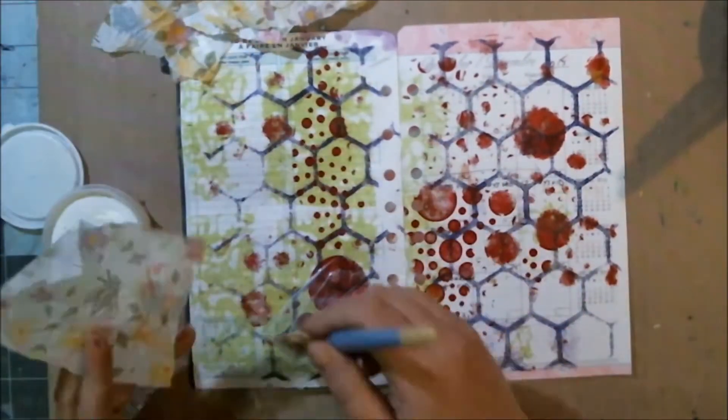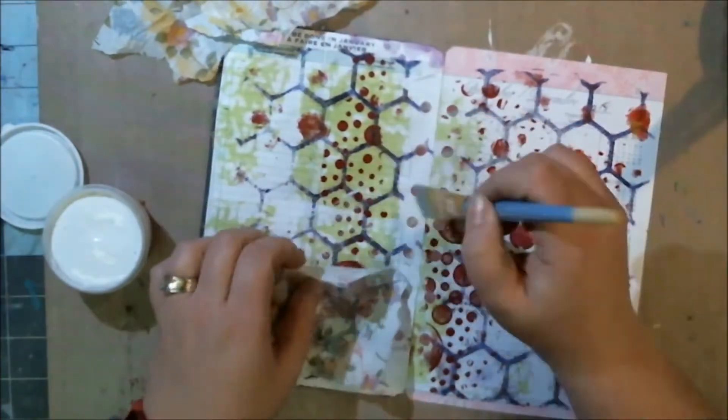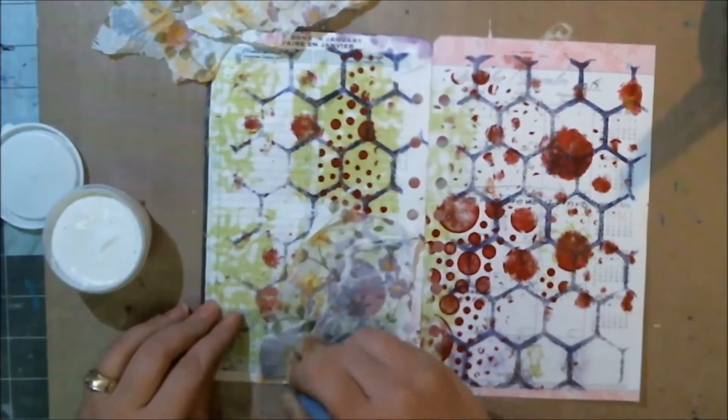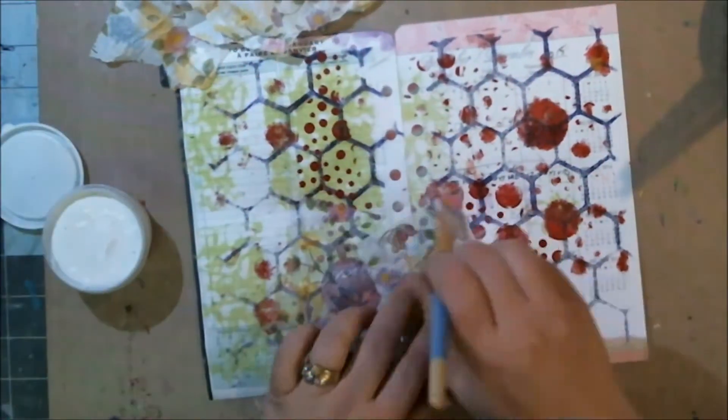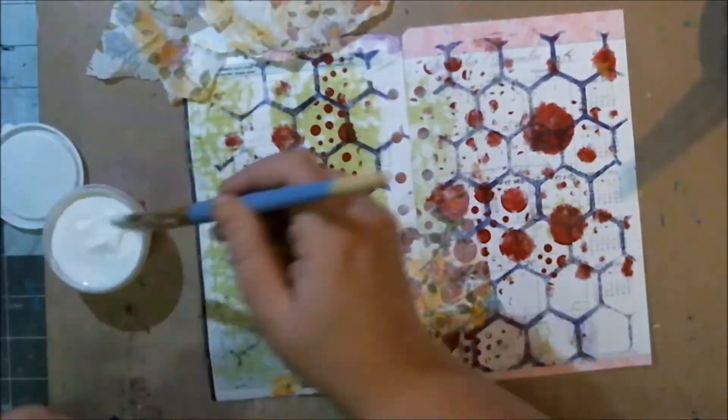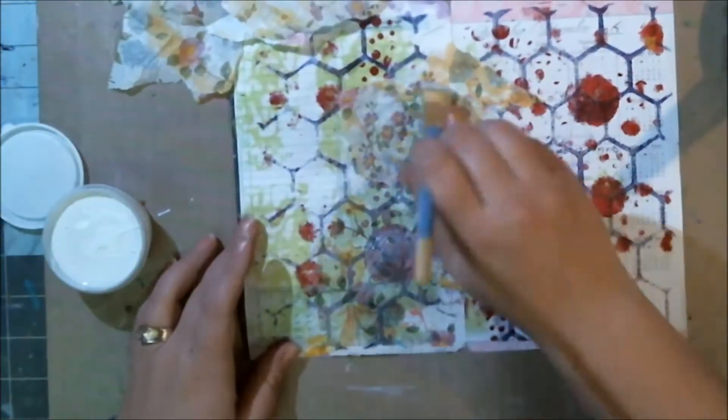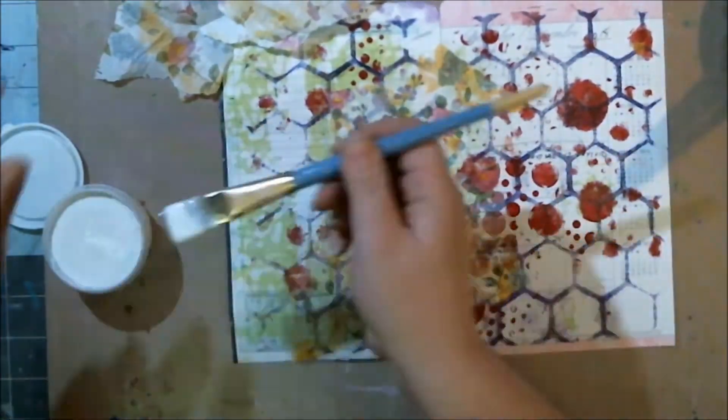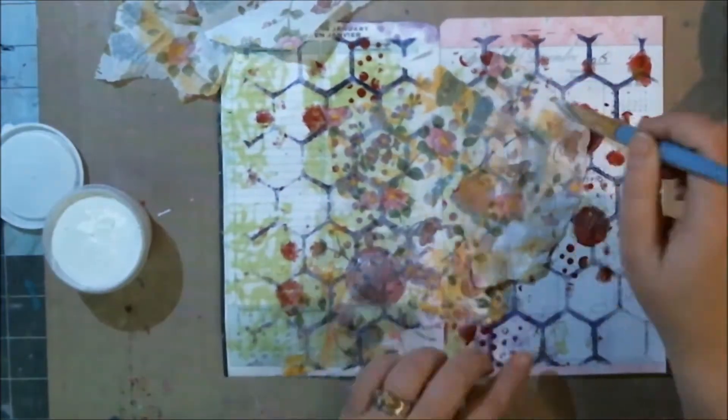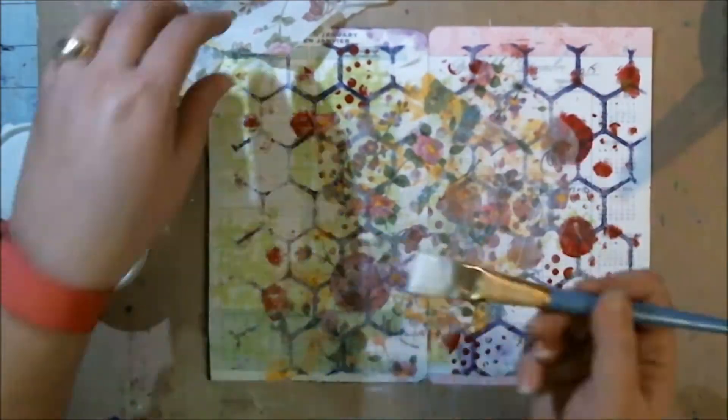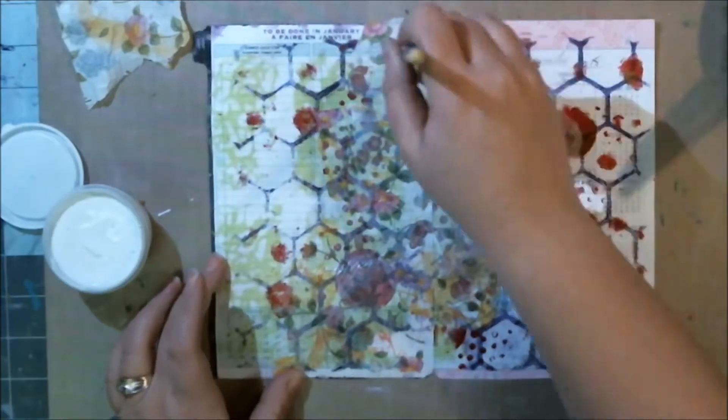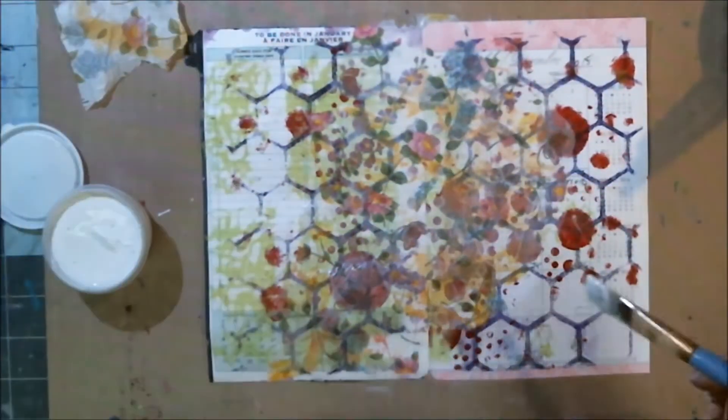I started off with just taking some matte medium and covering it all up with ripped up tissue paper. This has been my favorite tissue paper that I have purchased so far, and I'm getting towards the end of the stash. I wanted to put this in my journal as part of a remembrance kind of thing.